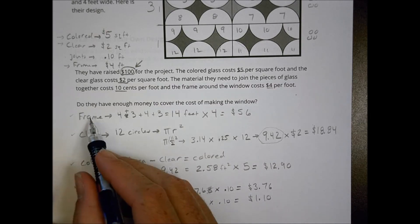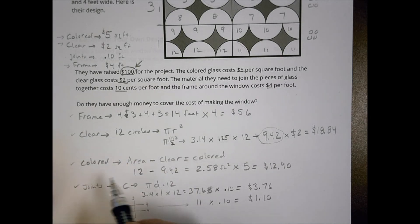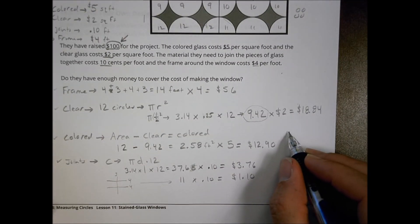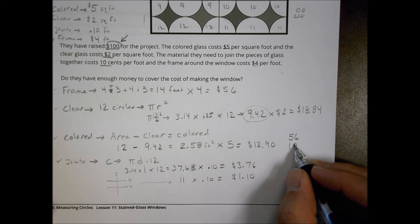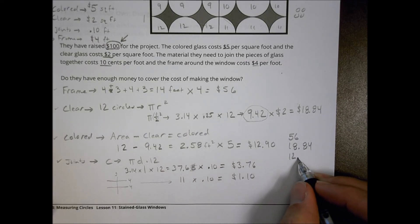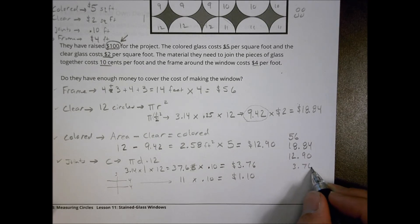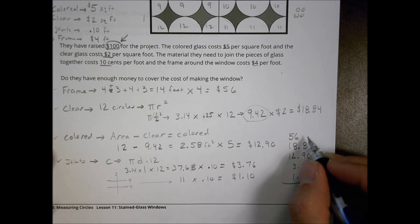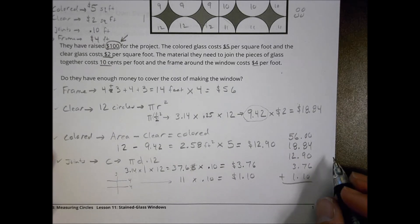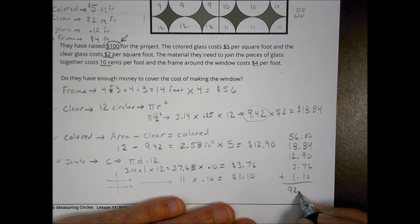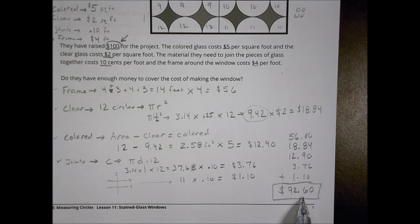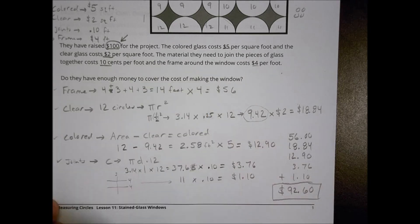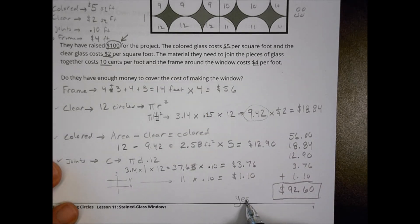So I have now the frame, the clear, the colored, and the joints. And what I need to do is then combine all those together to get my total. So I have a 56 plus an 18.84 plus a 12.90 plus a 3.76 plus a 1.10. And when I add all of that up, what I come up with is $92.60. So my total, based upon my math here, is going to be $92.60. The class has raised $100 for the project. So the answer to the question would be, yes, they have enough money to do the project. And that's how you might go about solving that one.